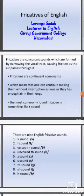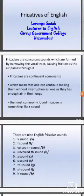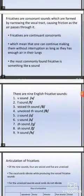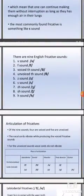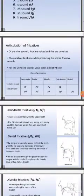The nine fricatives are: F and V; voiced TH sound and unvoiced TH sound; Z sound and S sound; SH sound and ZH sound; and H sound. These are the nine English fricative sounds. From these, there are voiced and also voiceless. Of the nine sounds, four are voiced and five are voiceless.